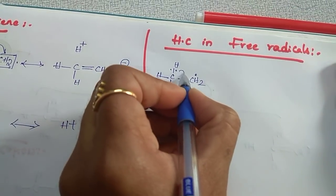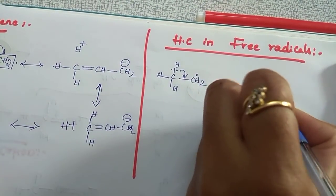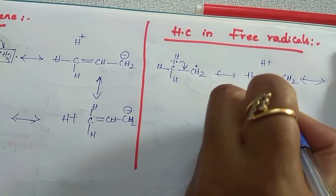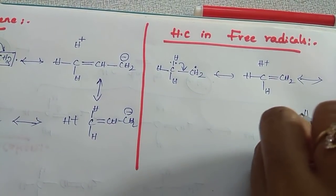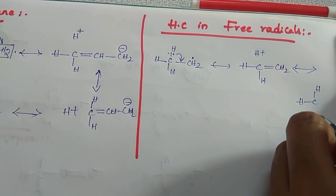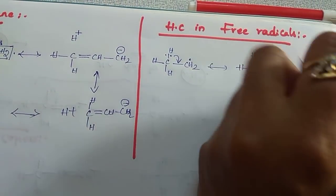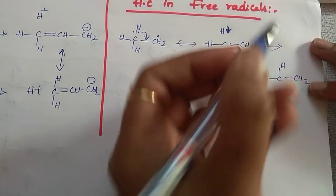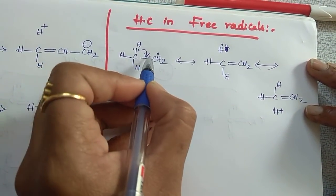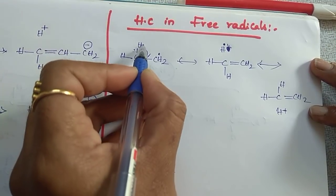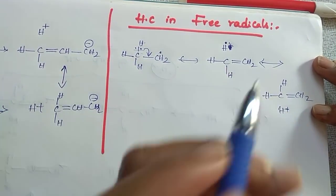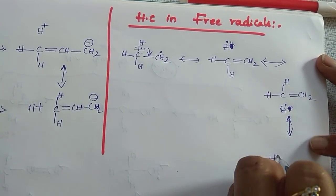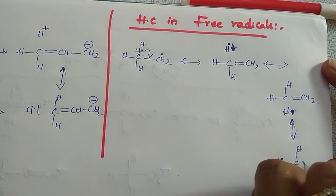For free radicals: if an alpha hydrogen involves, what structure do we get? H⁺ and a double bond to CH₂. If the second hydrogen involves, we get another structure — here the two electrons shift: one radical pairs with one electron to form the bond, so we get a free radical at the other carbon. If the third hydrogen involves, we again get H⁺, a double bond, and CH₂ with a free radical. This is how hyperconjugative structures are drawn for free radicals.